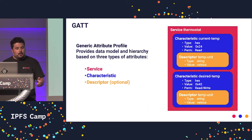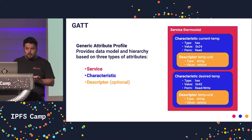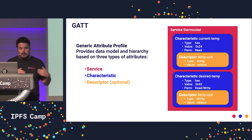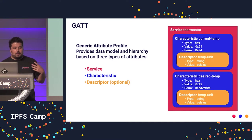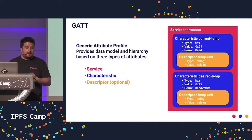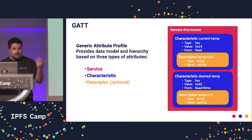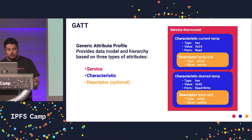All BLE applications are built on top of the GATT profile. You can see that as a kind of API endpoint. For example, if you have a thermostat, it will advertise a thermostat service with two characteristics: the first one is the current temperature, which is read-only, and the second one is the desired temperature, which is read and write so you can set the temperature you want.